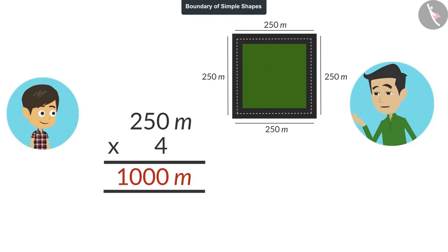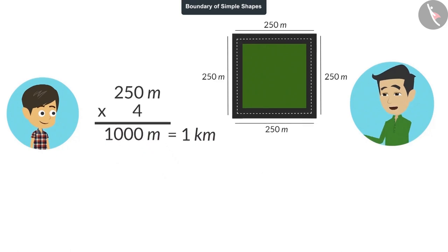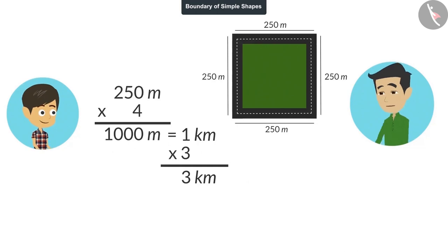And how many kilometers is 1000 meters? 1 kilometer. All right. Now tell me, how many rounds do I have to take of this boundary to complete 3 kilometers? For a 3 kilometer walk, you have to take 3 rounds of this boundary. Perfect, Rayanj. And this is what I do. I take 3 rounds of this boundary. This tells me that I have walked 3 kilometers.